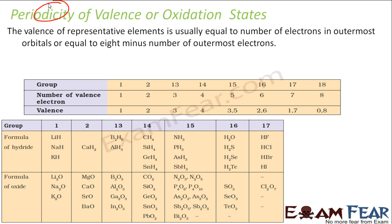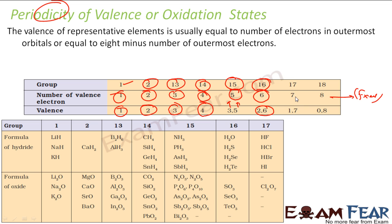There is some periodicity in the oxidation state. For group 1, the number of valence electrons is 1 and oxidation state is generally 1. For group 2, valence electrons is 2 and oxidation state is 2. For group 13, valence electron is 3 and oxidation state is 3. For group 14, you have 4 valence electrons and oxidation state is 4. For group 15, valence electrons is 5 and oxidation state can be 3 or 5. For group 16, valence electrons is 6, but the oxidation state can be 2 or 6. For group 17, valence electrons is 7, but oxidation state can be 1 or 7. For group 18, valence electrons is 8, but oxidation state can be 0 or 8.